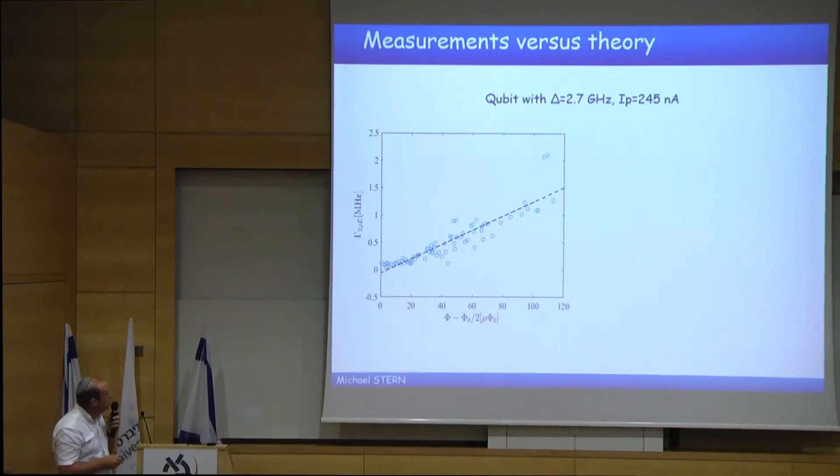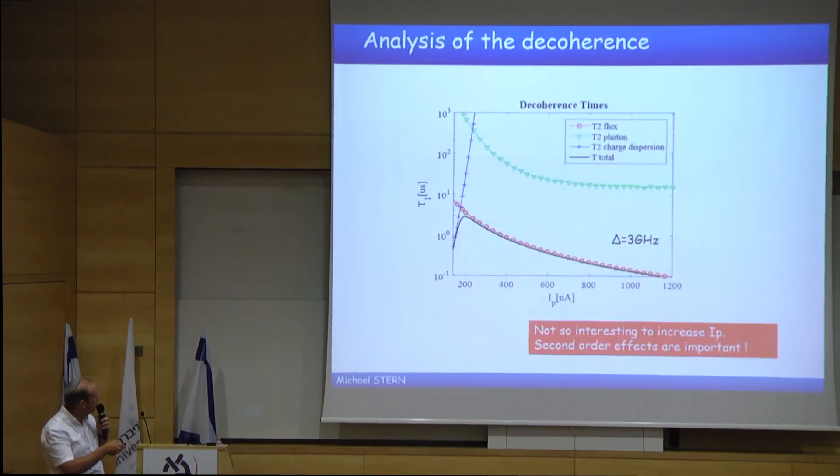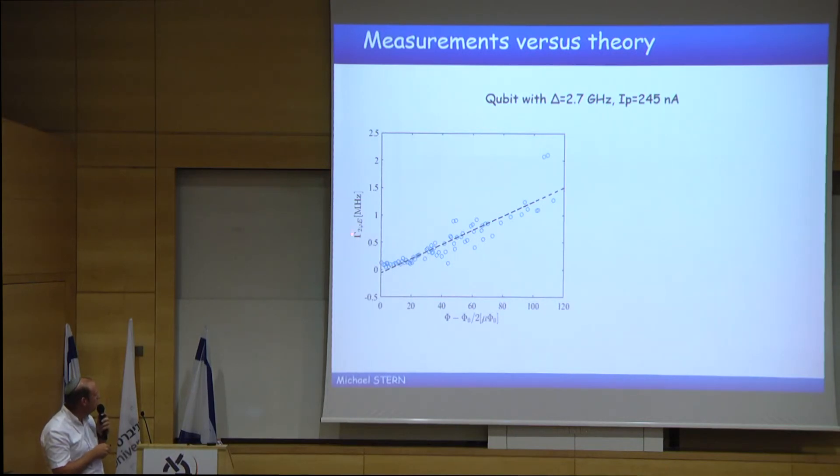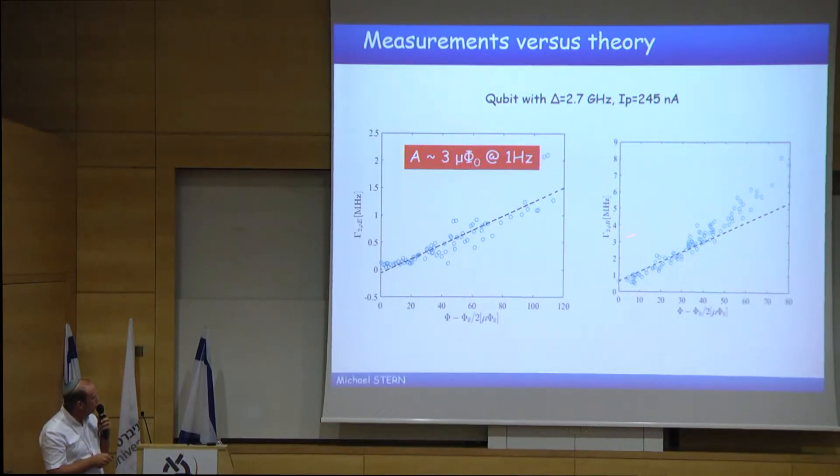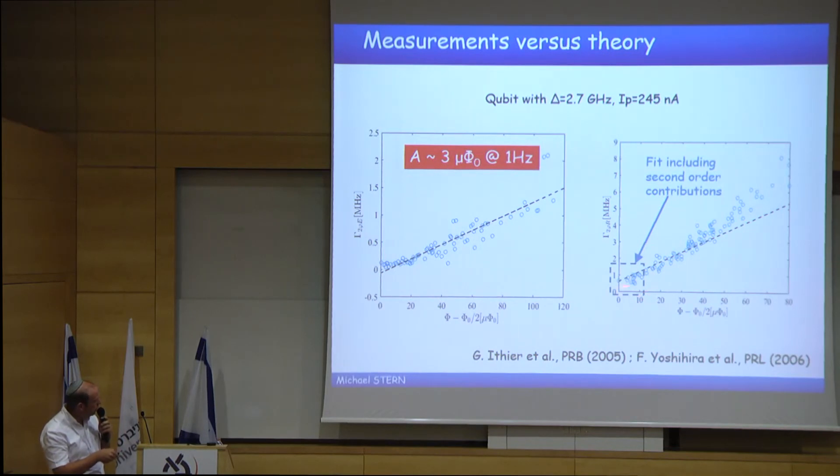I compare now the measurement versus theory. I come back to the qubit with 2.7 gigahertz and I_P at 245 nanoampere. And if I look at the gamma pure dephasing rate of the echo, I can extract from that the flux noise, which is of the order of 3 microphi_0 at 1 hertz. And if I look now at the pure dephasing rate of the Ramsey, I see that there is a quite good fit. It's not a fit. It's just putting a line and extracting the value from here and putting it here. But what I see is that even at phi_0 over 2, there is a good fit, which means that including second order contribution is important.